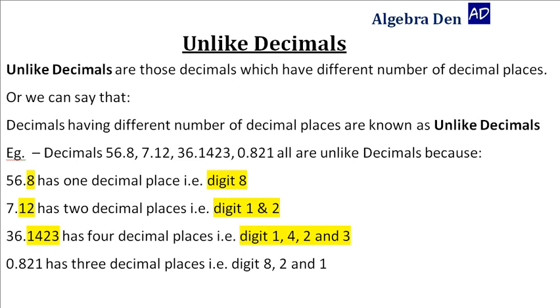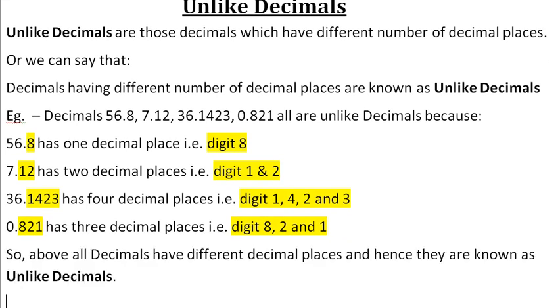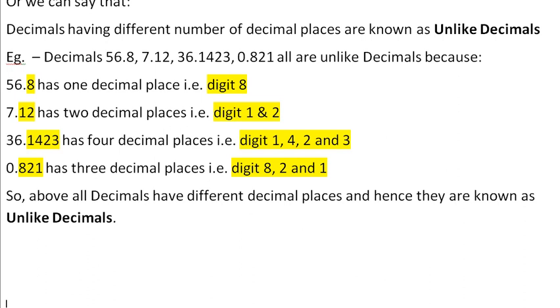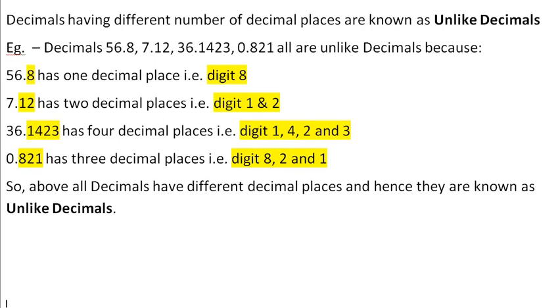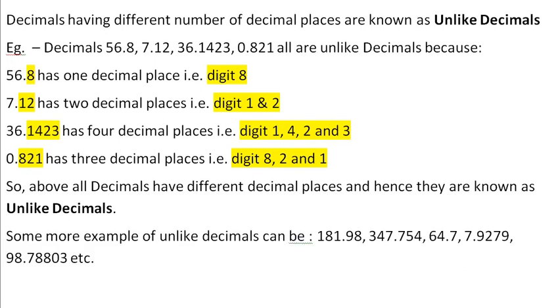0.821 has three decimal places, i.e. digit 8, 2 and 1. So, above all decimals have different decimal places and hence they are known as unlike decimals. Some more examples of unlike